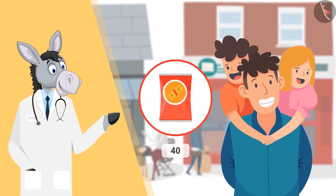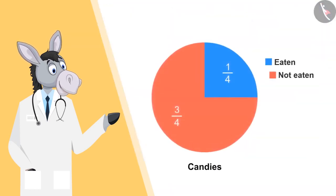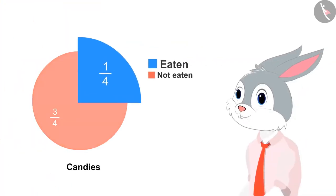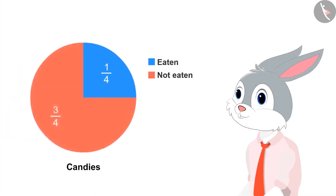Now let's look at some more examples to clear this misconception. Father of Bhimla and Chandu has bought a packet of candy. It contains forty candies. Now look at this pie chart to find out how many candies have been eaten by the kids. They ate one by four, that is one-fourth of the candies. So one-fourth of forty is ten. So children ate ten candies.